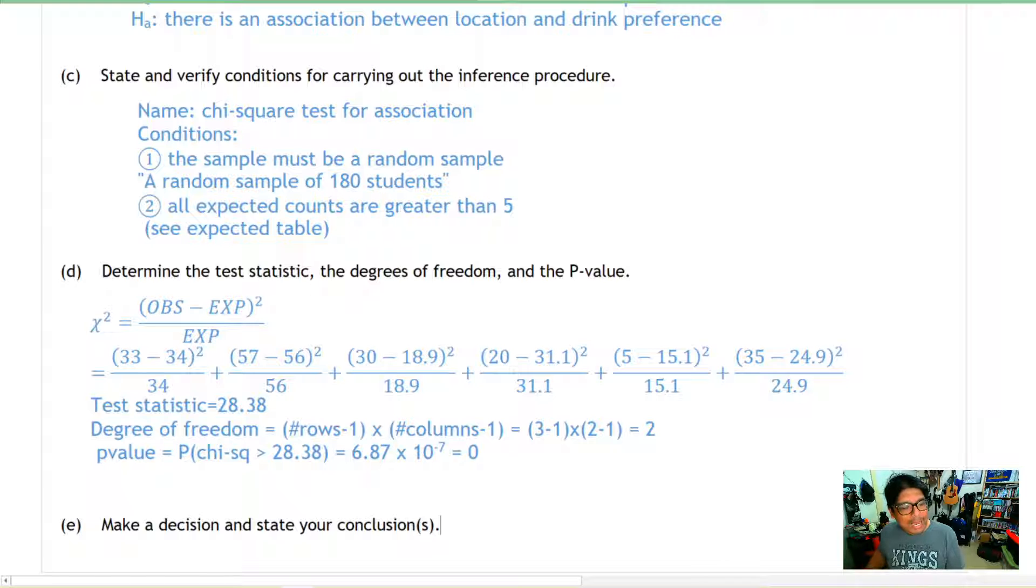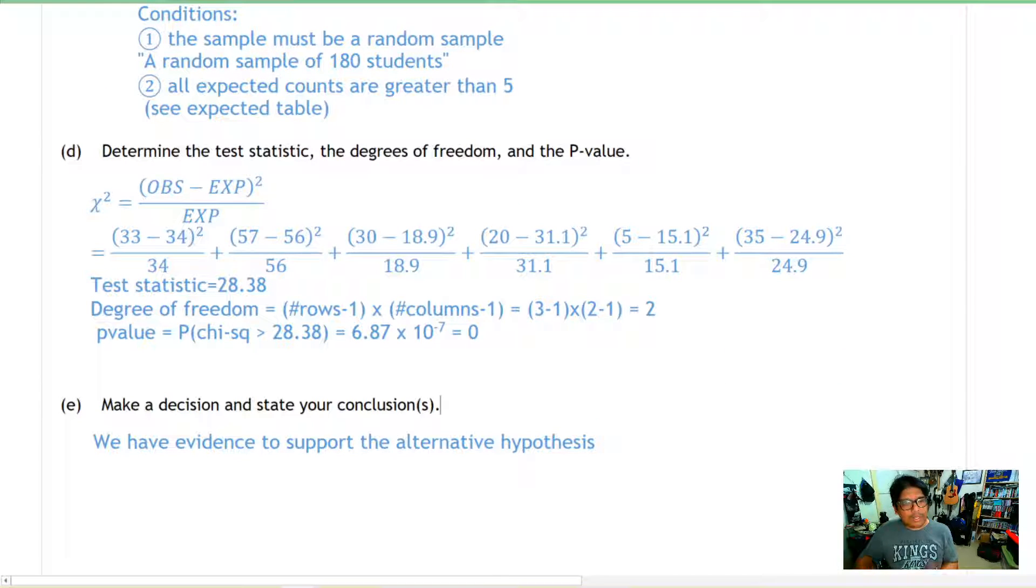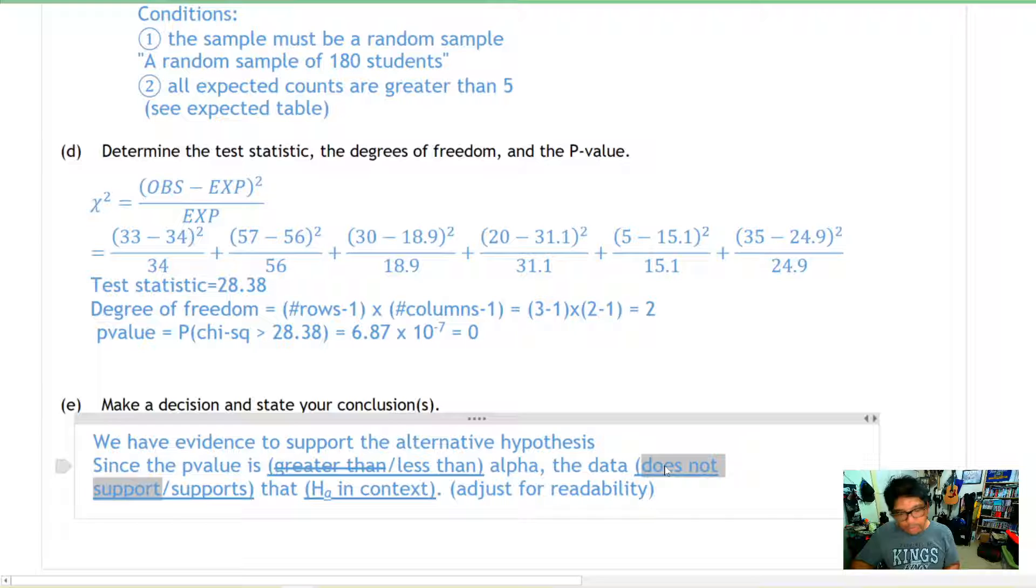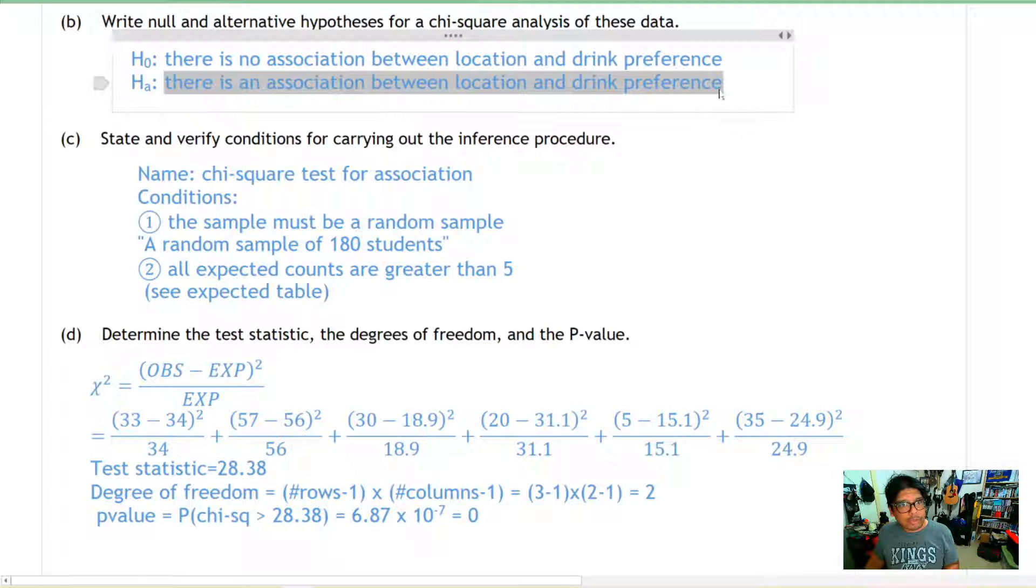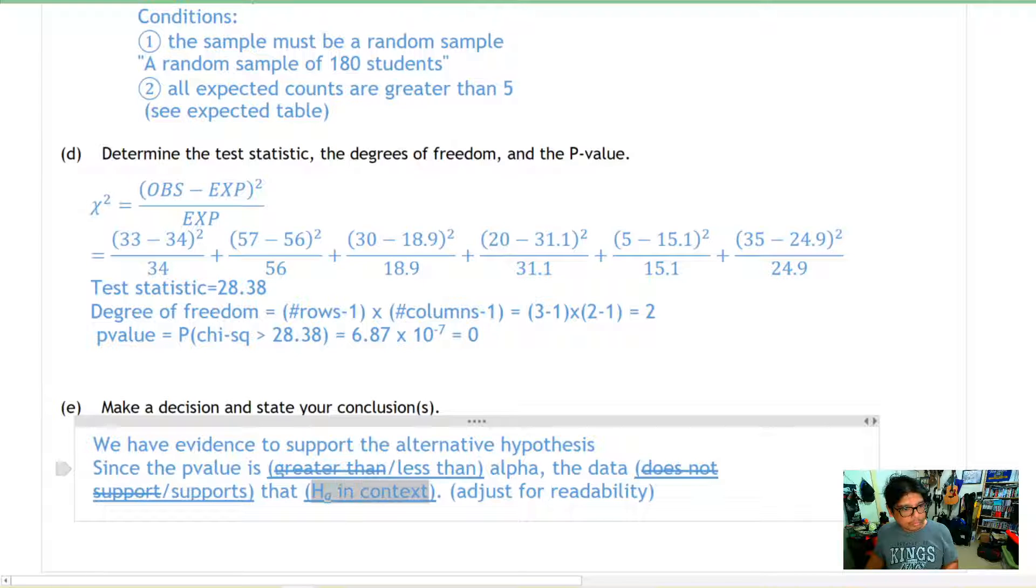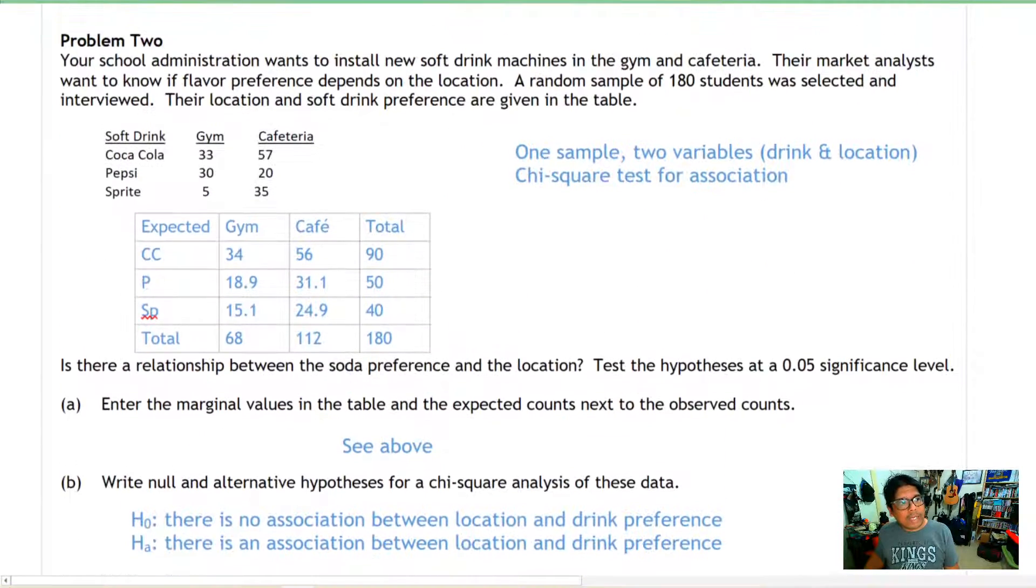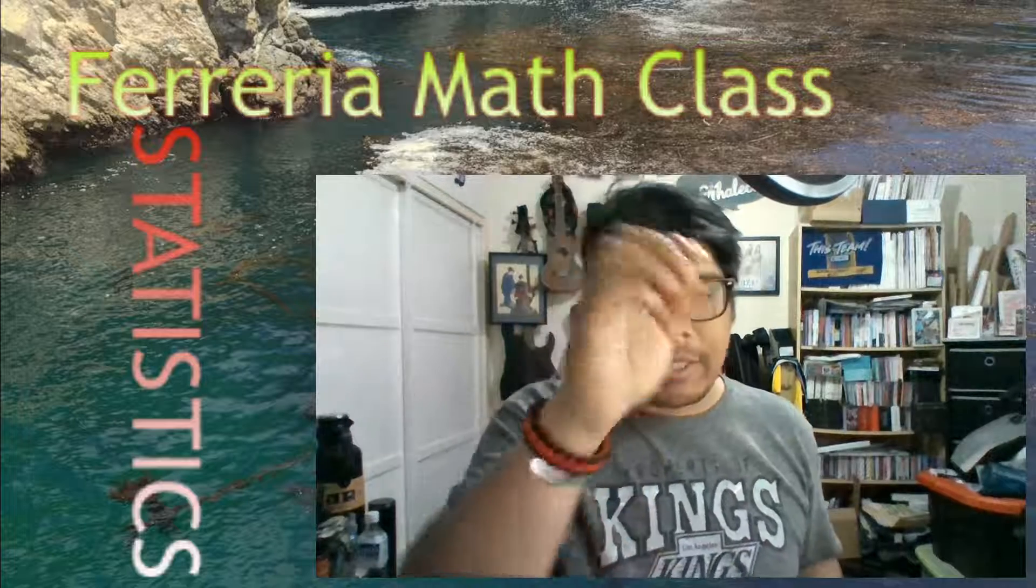There's our p-value, which means we have evidence to support the alternative hypothesis. Our p-value is definitely less than alpha, so our data supports the alternative hypothesis. The alternative hypothesis was there is an association between drink preference and location. That's all of question two on your practice exam. We'll see you next time when we look at question three on your AP Statistics chapter 11 practice exam. See you guys next time.